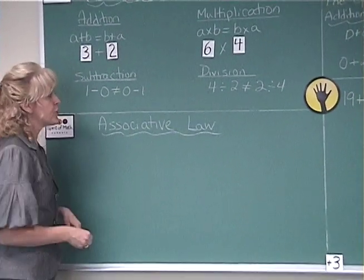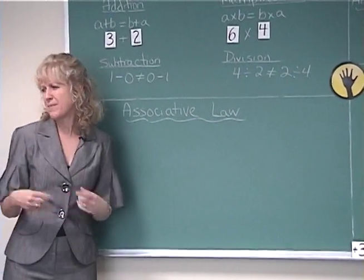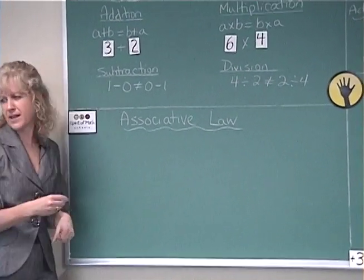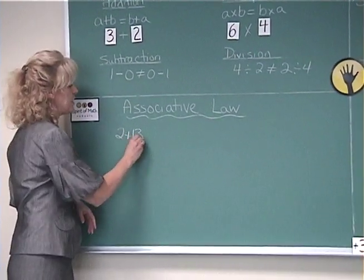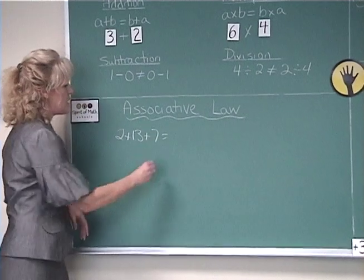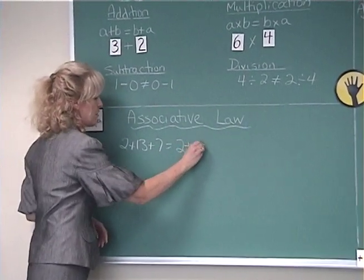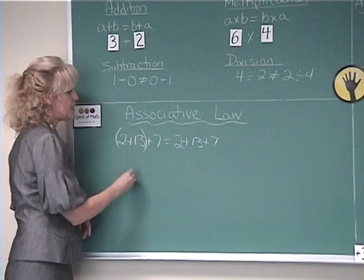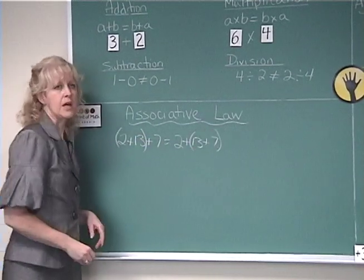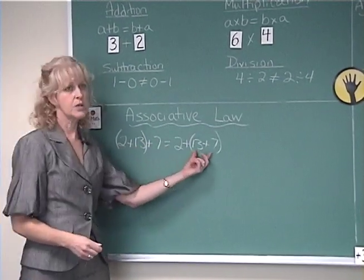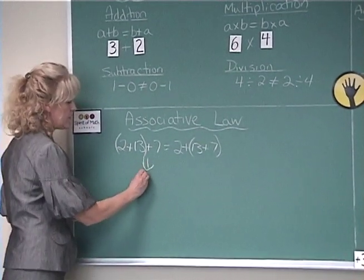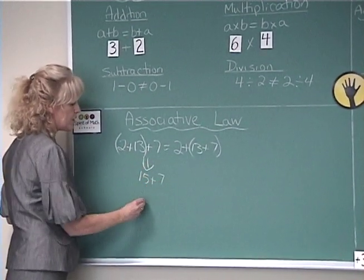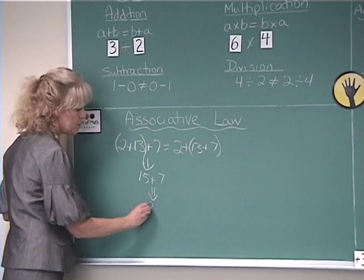In the associative law, you could have a question such as, let me see, I'll just pick out something back here. Let's use 2 plus 13 plus 7. When you use the associative law for addition, you can see that that is equal to that. In other words, you're grouping the numbers together. In this case, 2 plus 13 is equal to 15 plus 7, and 15 plus 7 gives you 22.